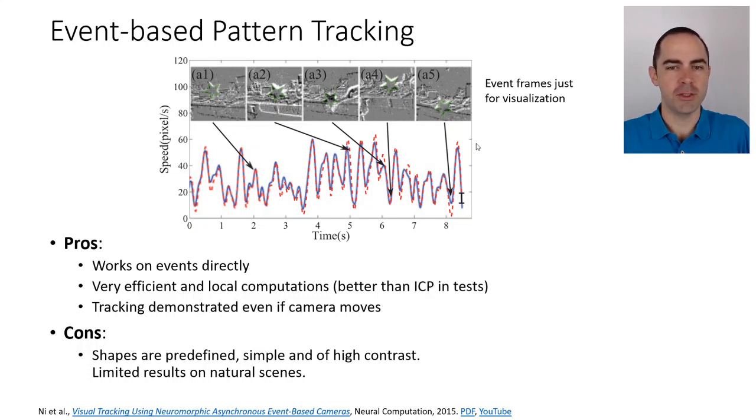Remember, these event frames are just for visualization; the tracker is working on an event-by-event basis. What are the disadvantages? The shapes are predefined and simple, and maybe of high contrast. This is tracking a bright or dark shape that is very easily distinguishable to a human. For the computer, we're just saying try to follow the events that have the shape of a star. This is limited, but if the star is big enough with respect to the rest of the scene and has high contrast, then it might be easier to track than in other more natural situations.